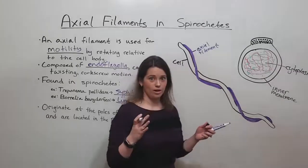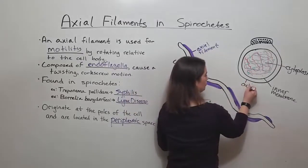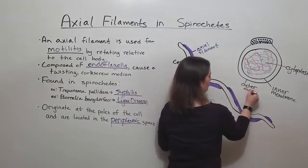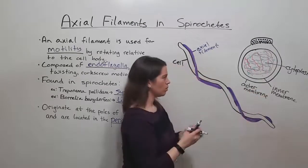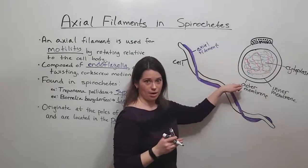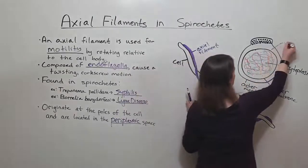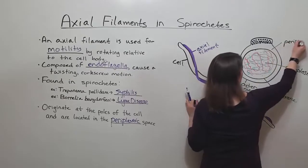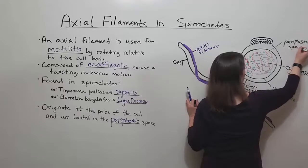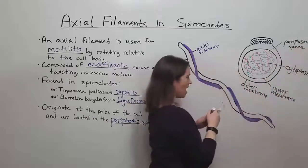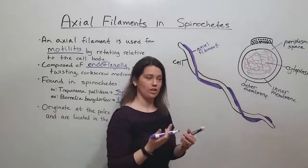Outside of that inner membrane there is what's known as the outer membrane, which is right here. Between the inner membrane and the outer membrane there is some space, known as the periplasmic space. And that is where the endoflagella that make up the axial filaments are found.